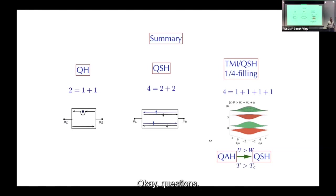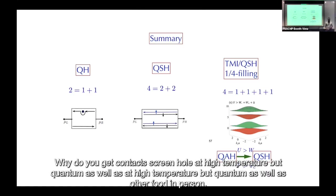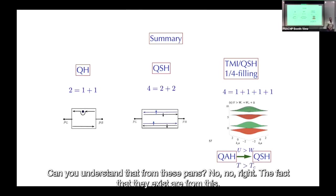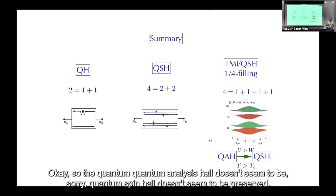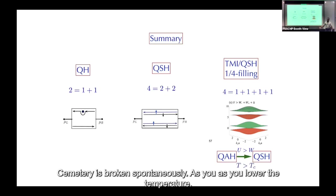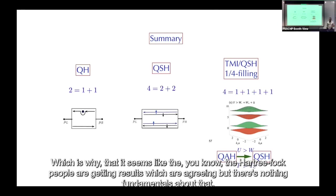Q: Why do you get quantum spin Hall at high temperature but quantum anomalous Hall at low temperature? A: That has to do with the spin susceptibility — the ferromagnetic correlations set in at low temperature. The quantum spin Hall symmetry is broken spontaneously as you lower the temperature, which is why Hartree-Fock people are getting results that agree, but there's nothing fundamental about that.